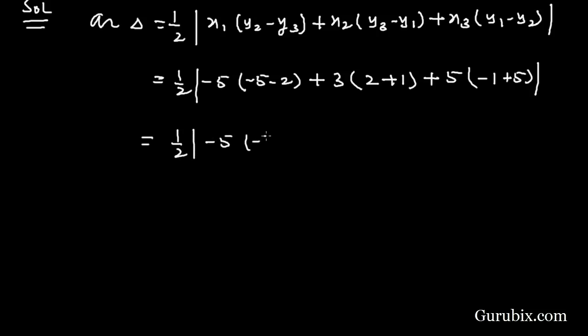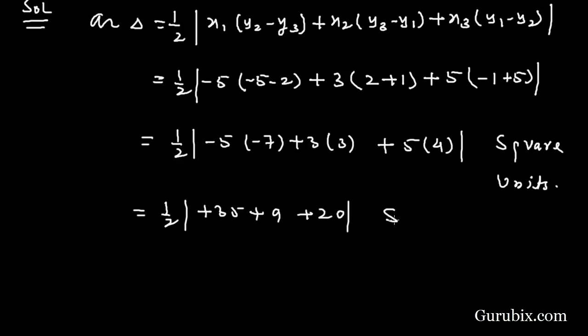-5 × (-7) + 3 × 3 + 5 × 4 square units. We have 1/2 |35 + 9 + 20| square units. This equals 1/2 |64| square units.